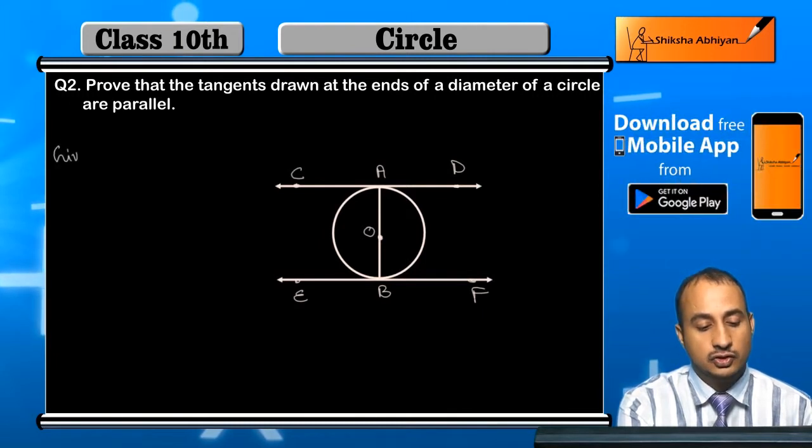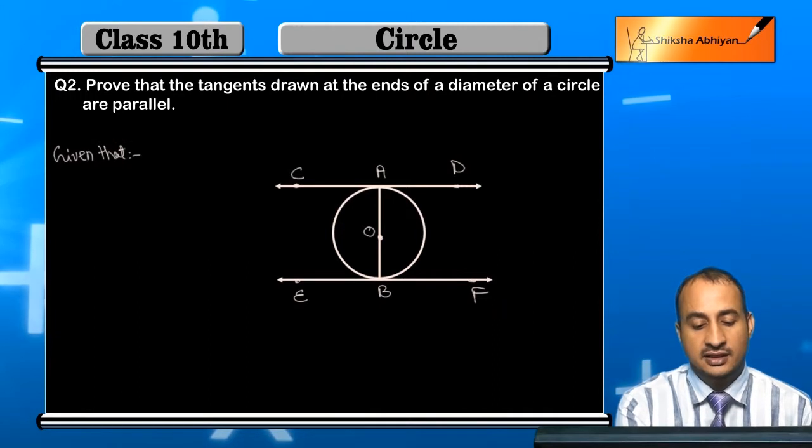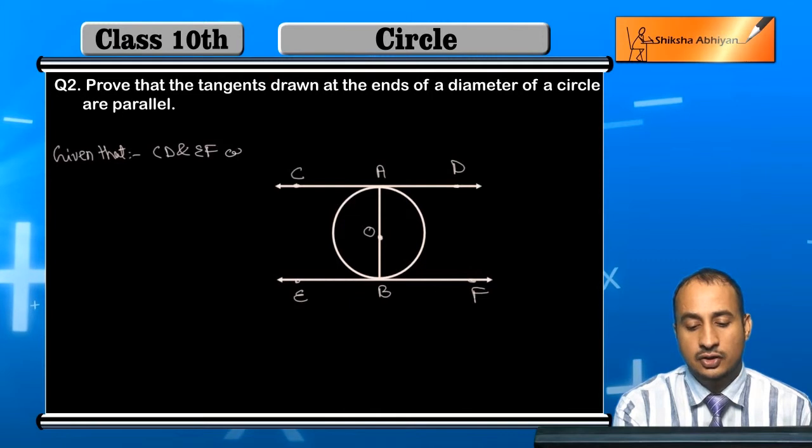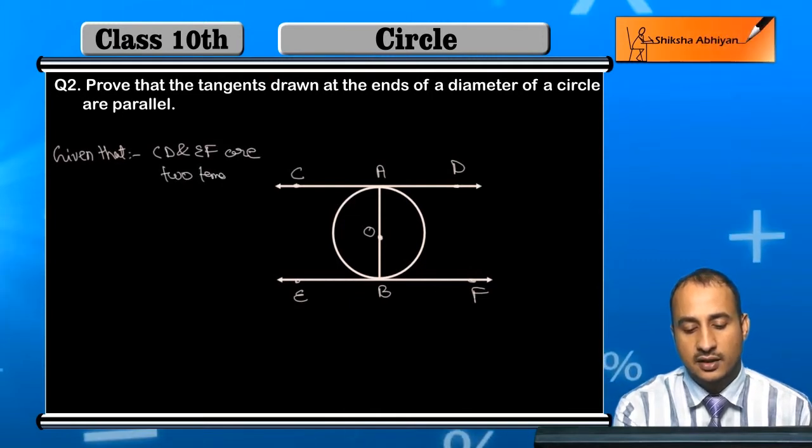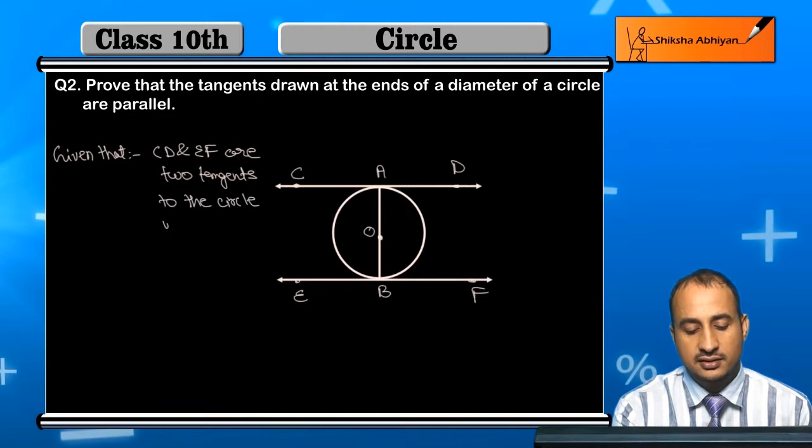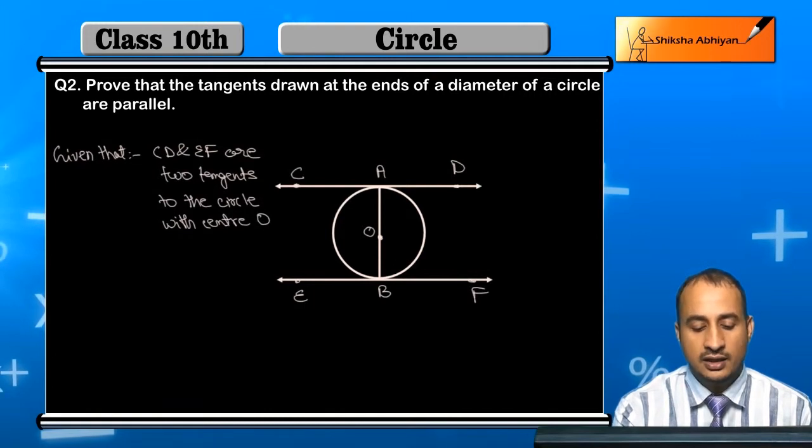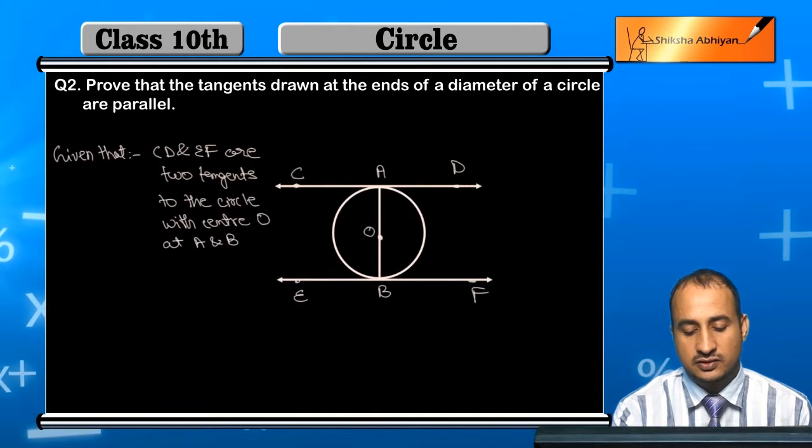Here we will write the proof. Given that: CD and EF are two tangents to the circle with center O at A and B respectively.